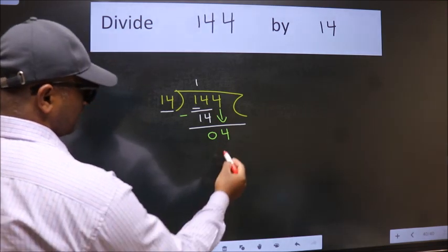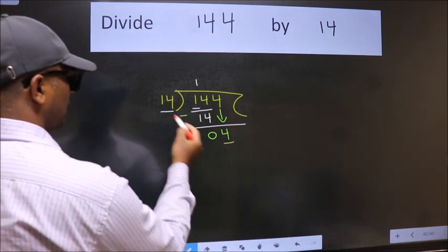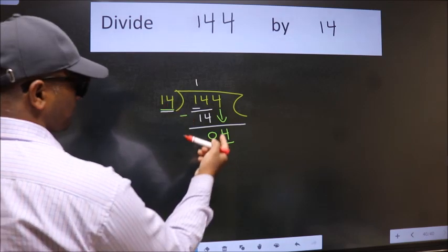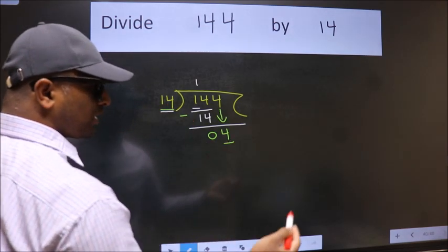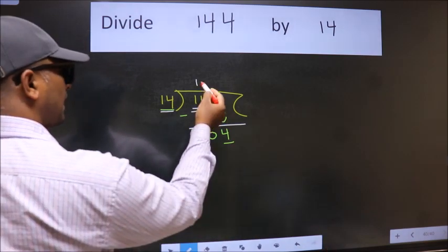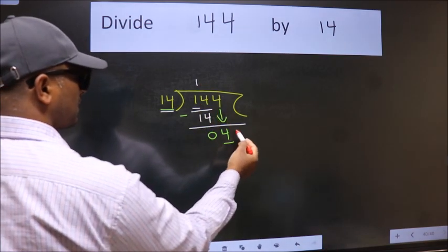Here we have 4, here 14. Four is smaller than 14. So what many do is they directly put dot, take zero, which is wrong.